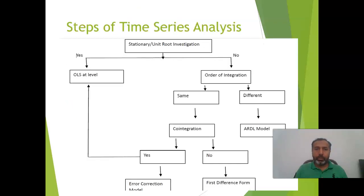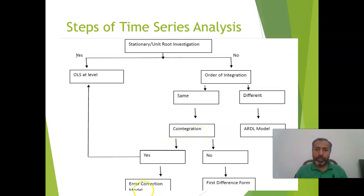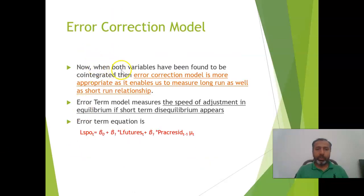Going back to the main steps of time series analysis: both variables were non-stationary at level and became stationary at first difference, so their order of integration was the same. When we checked for co-integration by running the ADF test on the residuals, we concluded that they are co-integrated. When variables are co-integrated, it is better to run the Error Correction Model instead of the first difference form, because the ECM helps us measure both the long-term and short-term relationship. Therefore, we should prefer the Error Correction Model over the first difference form model.